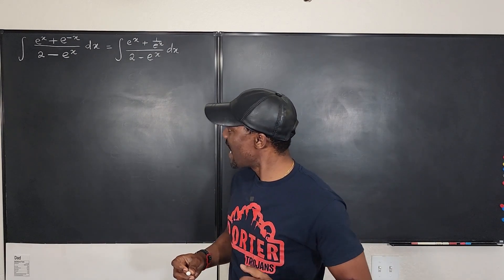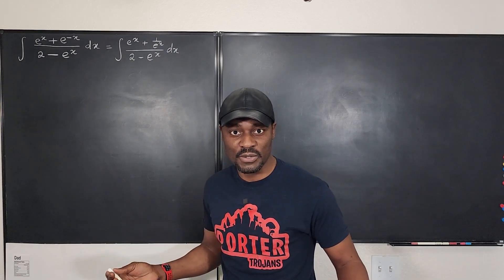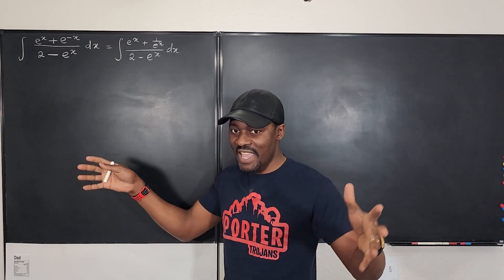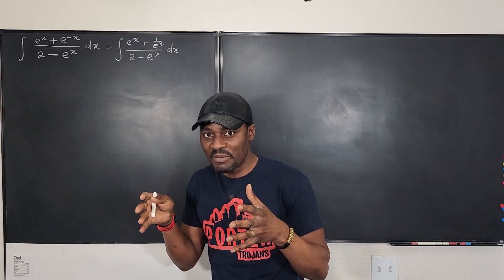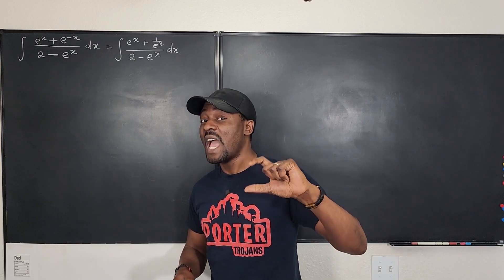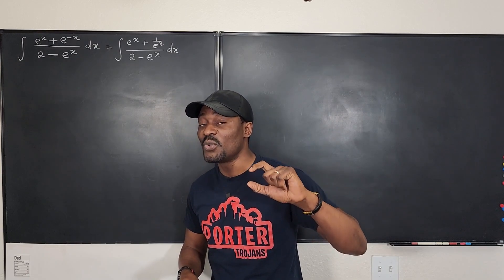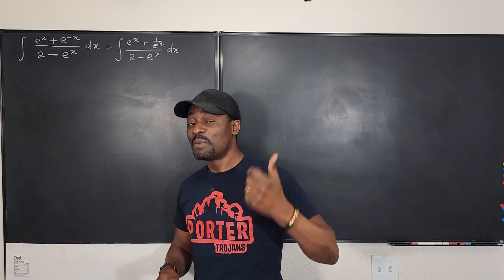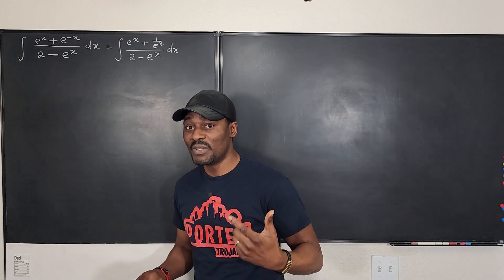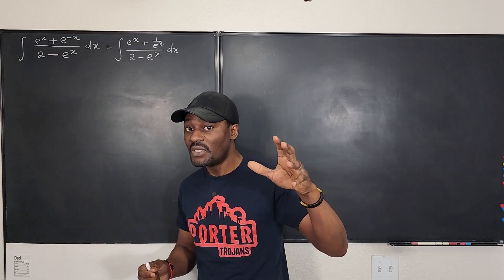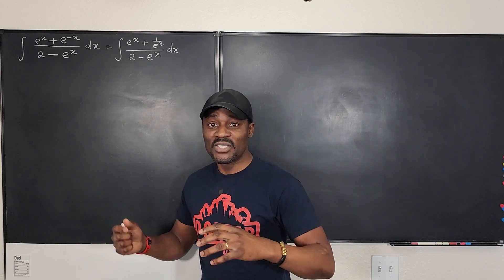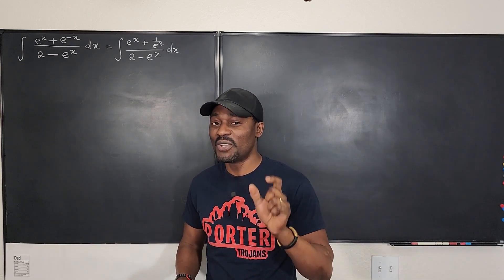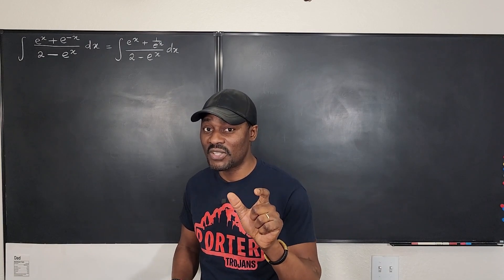The next thing I'm going to do is a u-substitution. Typically I would take everything in the denominator, but when you're dealing with exponential functions with e, it's better to focus on the top. But in this case, because everything is scattered, I'm just going to focus on e to the x.